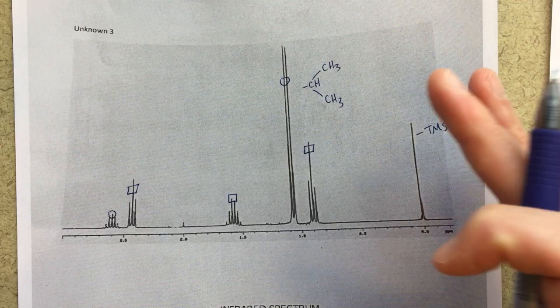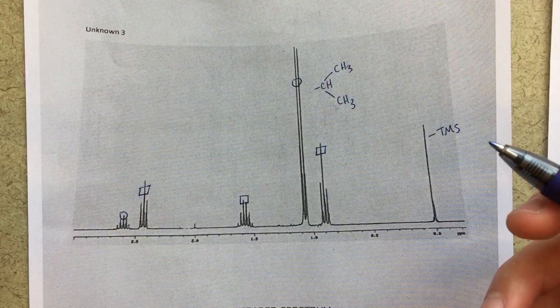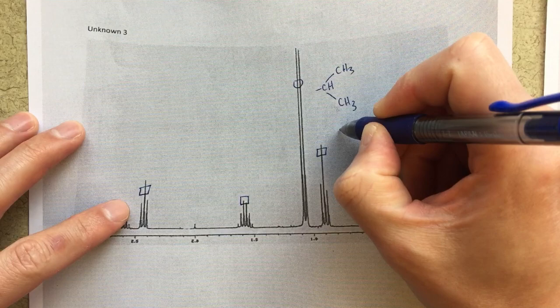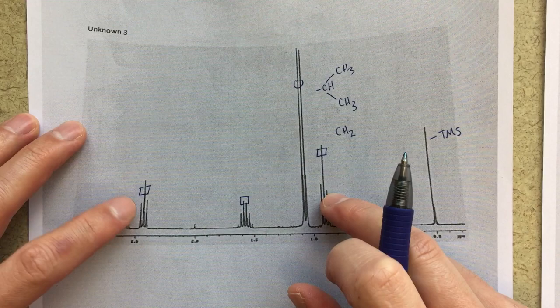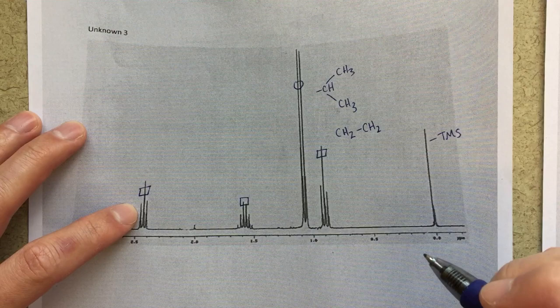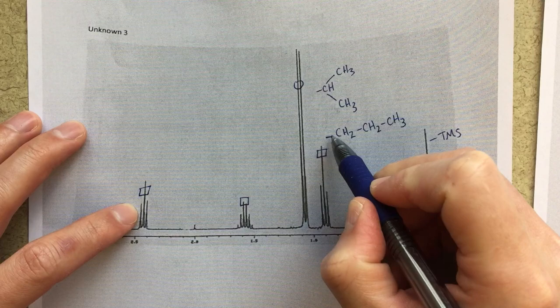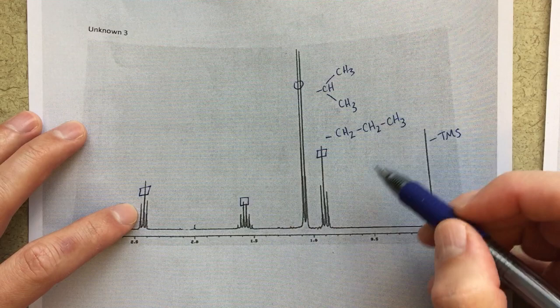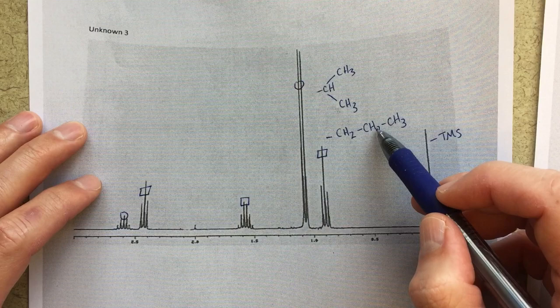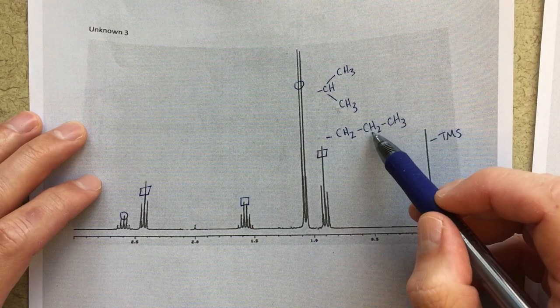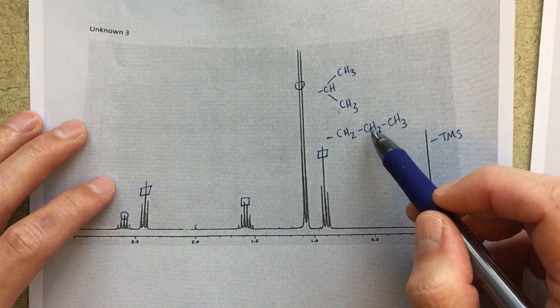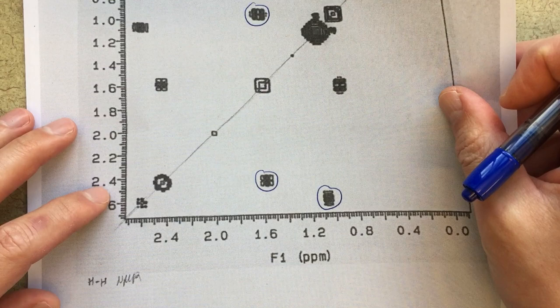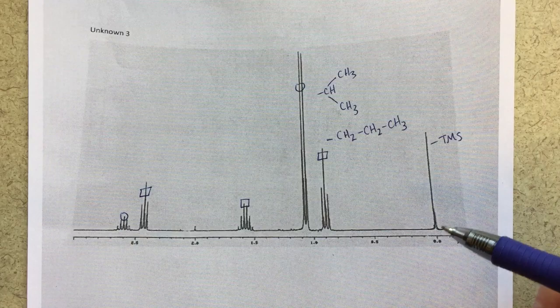At this point, what this is telling me is that we have a propyl group. A triplet means we've got a CH2 splitting the signal. The fact that I have two triplets suggests we've got two CH2 groups and then a CH3 at the end. So for a propyl group: the CH3 integrates to three and splits into a triplet; the central methylene is the multiplet at 1.6; and the other CH2 at 2.4 is again split into a triplet. The COSY confirms that 1.6 is coupled to both neighbors.